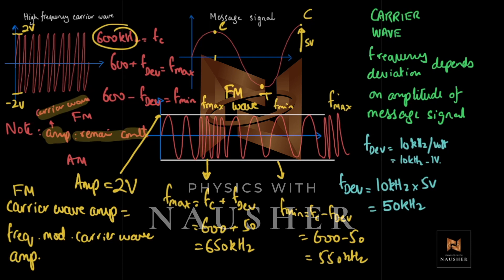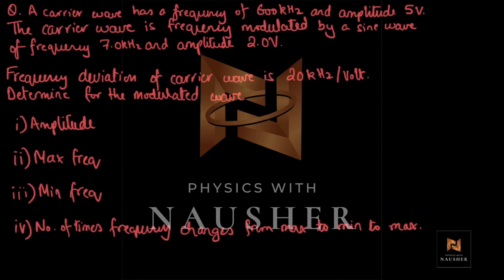In FM you are playing with the frequency of the carrier wave — changing it from 600 to 650 to 550 to 650. In AM, you did not touch the frequency; instead you played with the amplitude — 2V, 3V, 4V, going more, less, and back. Please remember very clearly the difference between FM and AM. Now let's attempt a question on FM.